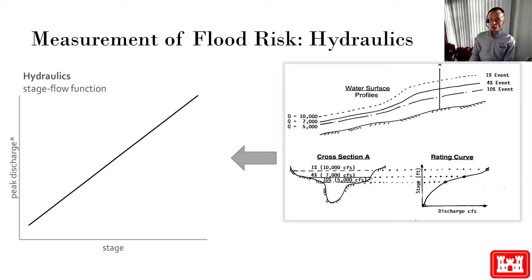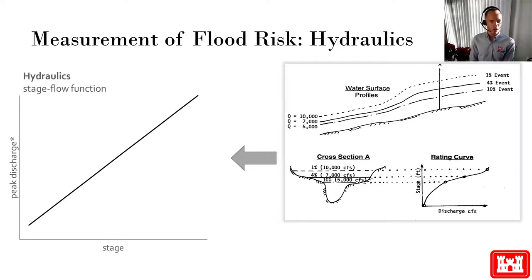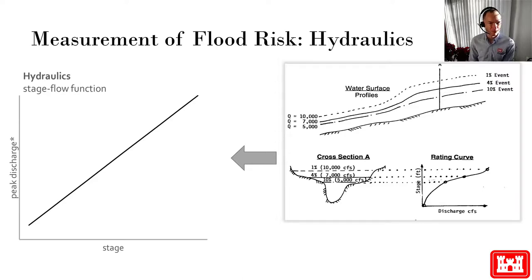We ask hydraulic engineers to tell us, for a given flow, how high will the water be? This has to do with channel geometry — how much water can a channel hold? This has to do with topography — where does water go in the floodplain? And this also has to do with things like channel roughness that affect the velocity of the flow. How quickly can the water be routed? Does the water rush by, or does the water get stuck and back up?